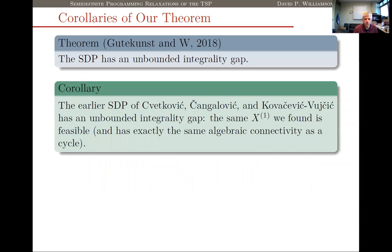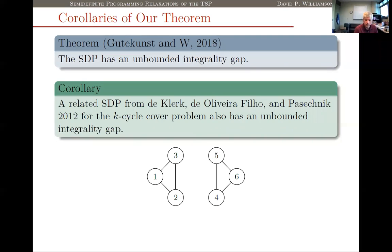We can also show that the 1999 SDP has an unbounded integrality gap using exactly the same construction: the matrix X^{(1)} that comes out of the 2008 SDP relaxation is also feasible for the 1999 SDP, has the same value, and has the same algebraic connectivity as a cycle. There are also other SDP relaxations considered by de Klerk and co-authors — for example, for the k-cycle cover problem — and we can show those too have unbounded integrality gaps.